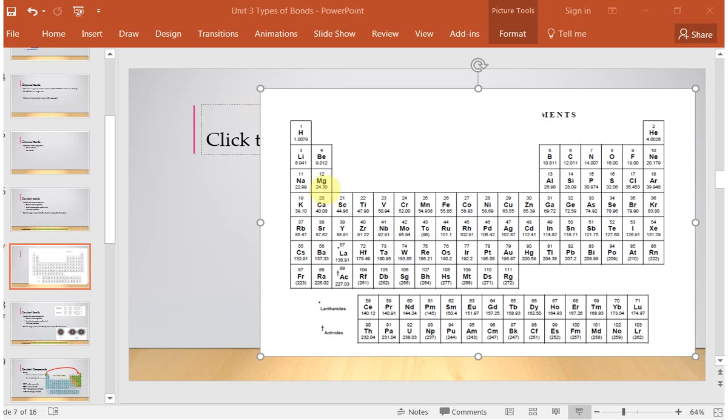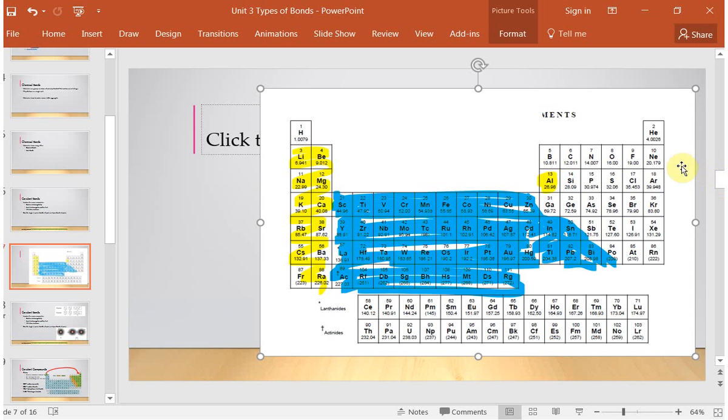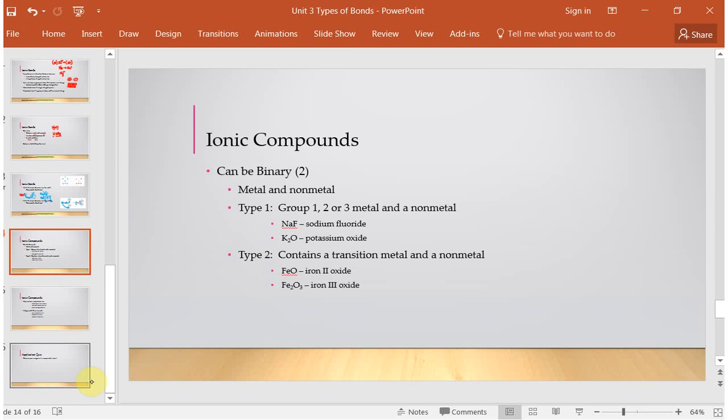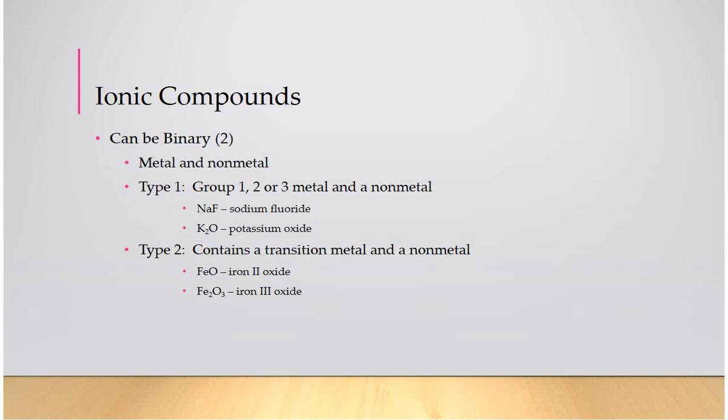So, if we're talking about just these main group metals from group one, two, or three, and not below the metalloids, these have names like NaF would be sodium fluoride. K2O is potassium oxide. The subscript just means how many of each there is. It can also be between a transition metal with a non-metal. So, here, FeO or Fe2O3. This is iron 2 oxide, iron 3 oxide. The thing here is we are specifying the charge. If you have a transition metal, you have to really worry about that charge and the name.